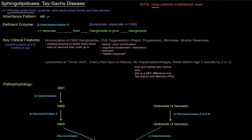It's an autosomal recessive deficiency of beta-hexosaminidase A, which is an enzyme that's important, especially in lysosomes, especially in the central nervous system.